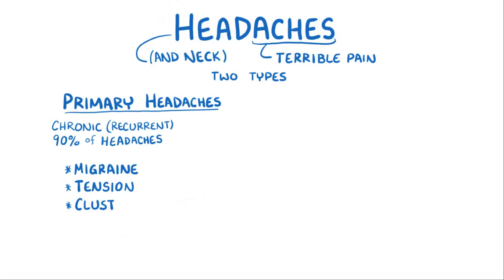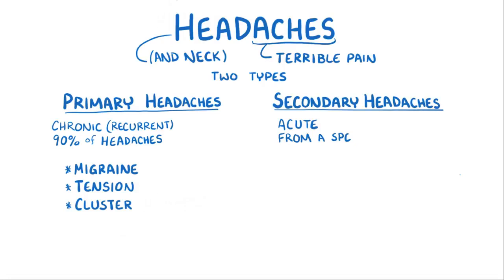The second type are called secondary headaches, and these are more acute and come from a specific underlying cause, like a serious head injury or a brain tumor.